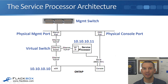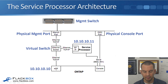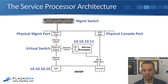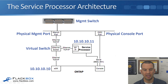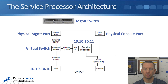The service processor also has connectivity to your console. Because the service processor and the E0M interface are both reached through the same physical port, they have to be in the same IP subnet. The service processor is a separate system, so it will have a different IP address, but it must be in the same subnet. For example, 10.10.10.10 for the management port on E0M and 10.10.10.11 as the IP address on the service processor.